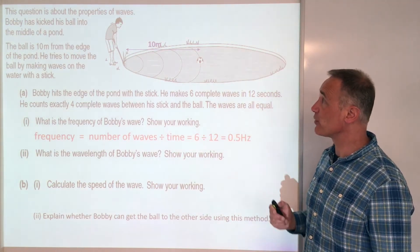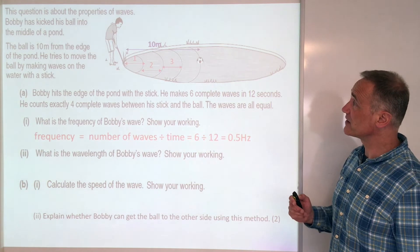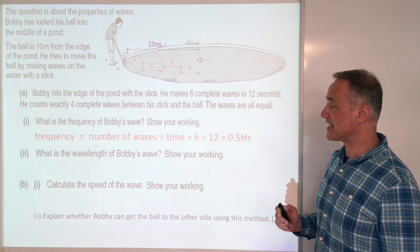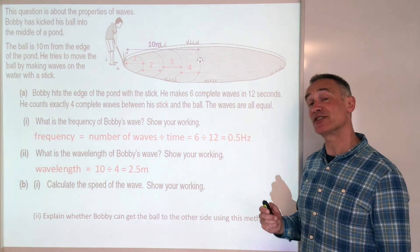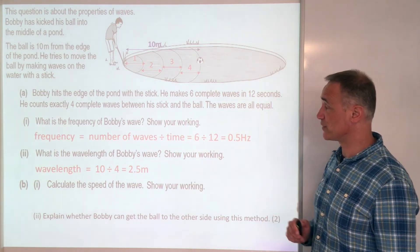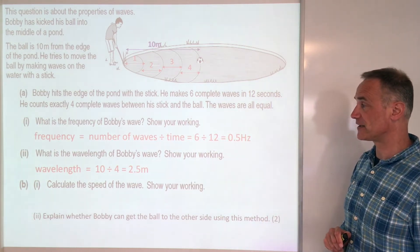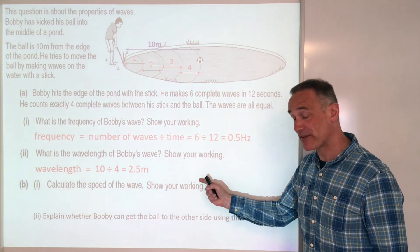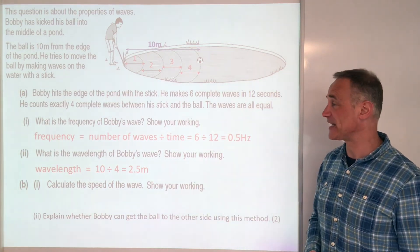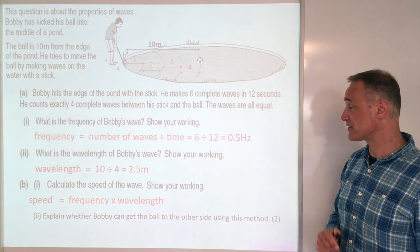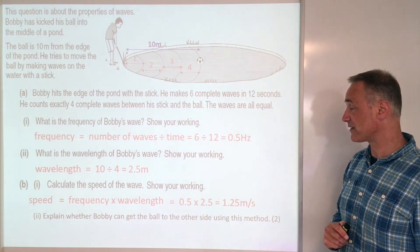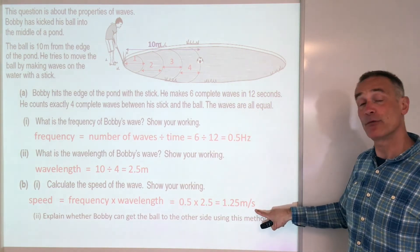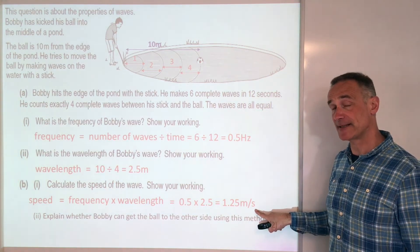The second part: what's the wavelength? You've got 4 wavelengths in 10 metres, so wavelength is 10 divided by 4, which is 2.5 metres. Now we've got both frequency and wavelength, so we can work out speed. Speed is frequency times wavelength: 0.5 times 2.5 equals 1.25 metres per second.